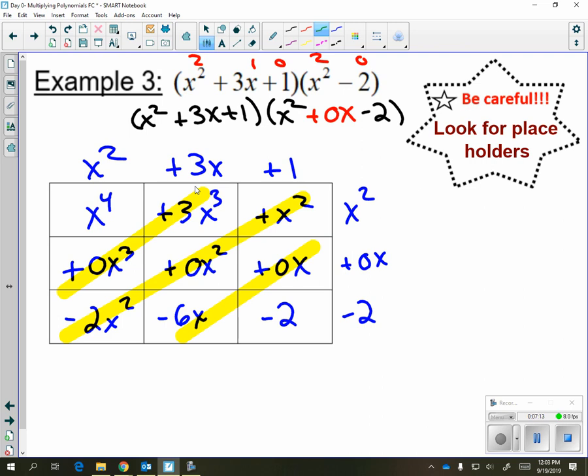We're going to end up with x to the fourth plus 3x cubed. We have a 1x squared minus 2x squared. So it's going to be minus x squared, negative 6x, and minus 2 to get our final answer. So these are your three examples of multiplying with the box method. Again, also known as the tabular method.